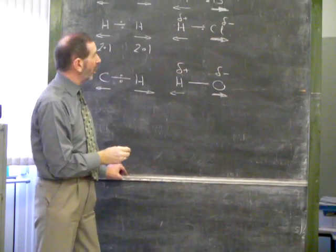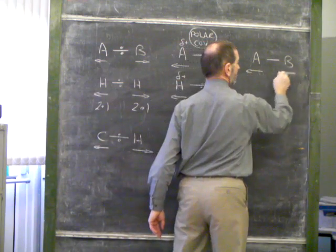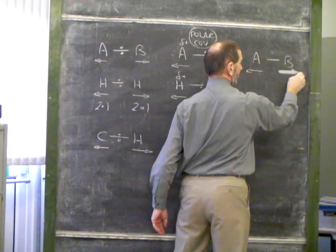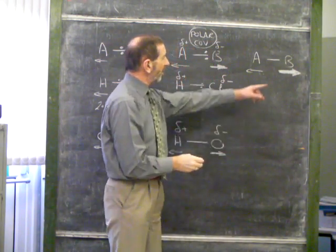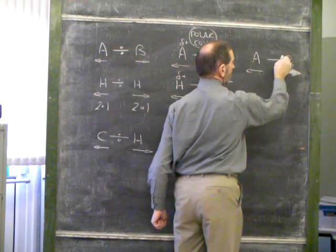And finally, if we push this concept to a limit, we could have a situation where there's an extremely large difference in electronegativity. So great, that this atom, with such a strong attraction, effectively steals both electrons to itself.